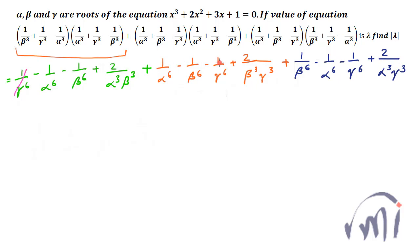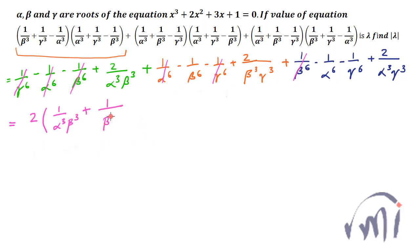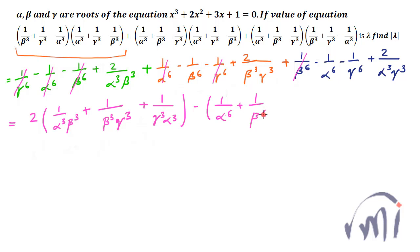Now, 1/γ⁶ cancels with −1/γ⁶, 1/α⁶ cancels with −1/α⁶, and 1/β⁶ cancels with −1/β⁶. So from here we get 2 × (1/(α³β³) + 1/(β³γ³) + 1/(γ³α³)) minus (1/α⁶ + 1/β⁶ + 1/γ⁶).